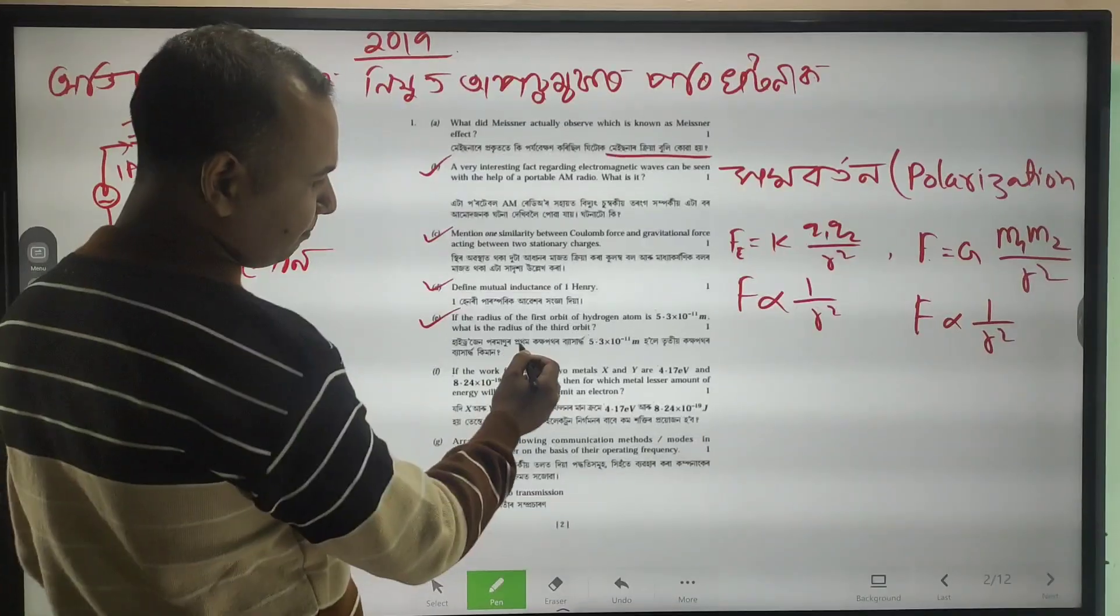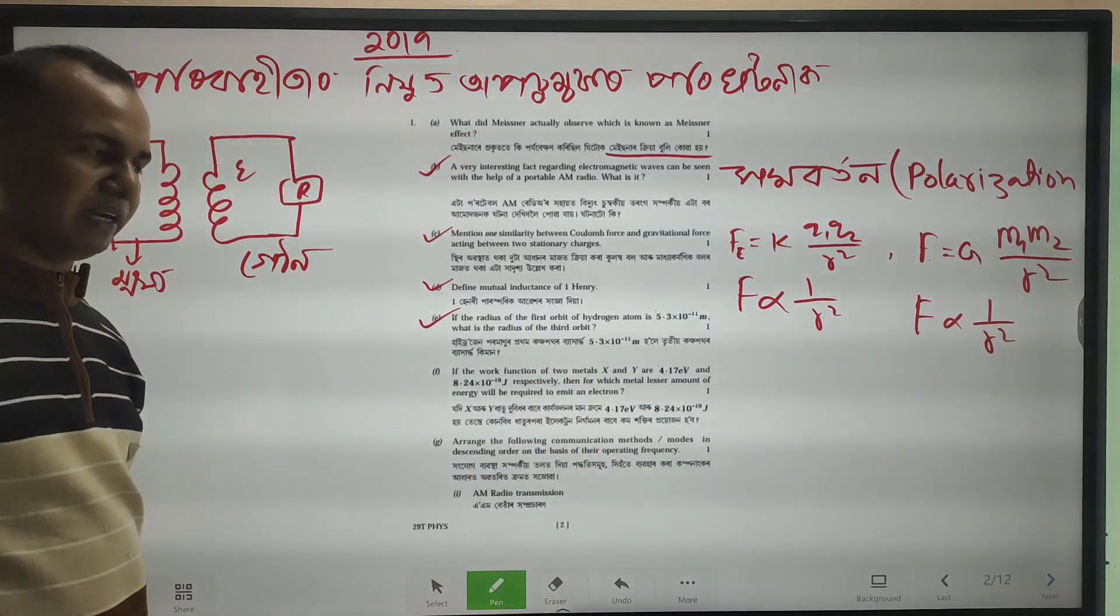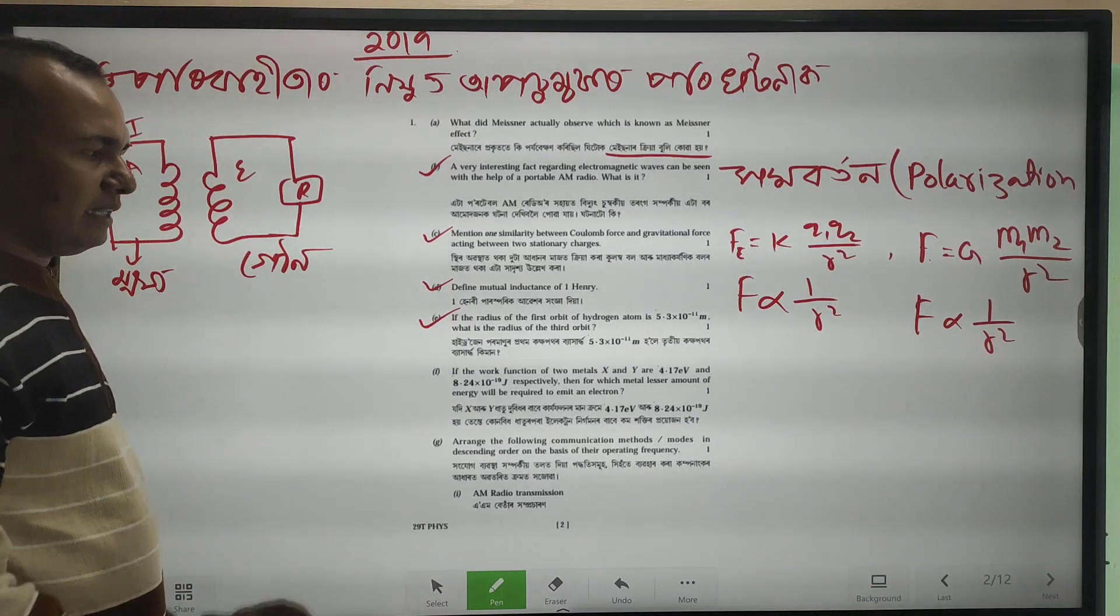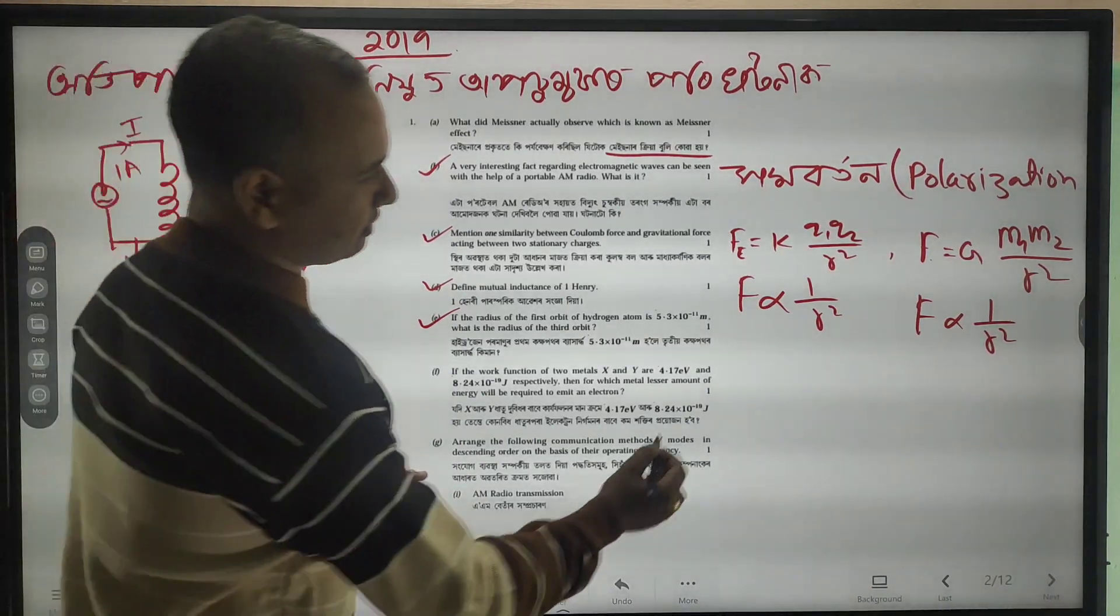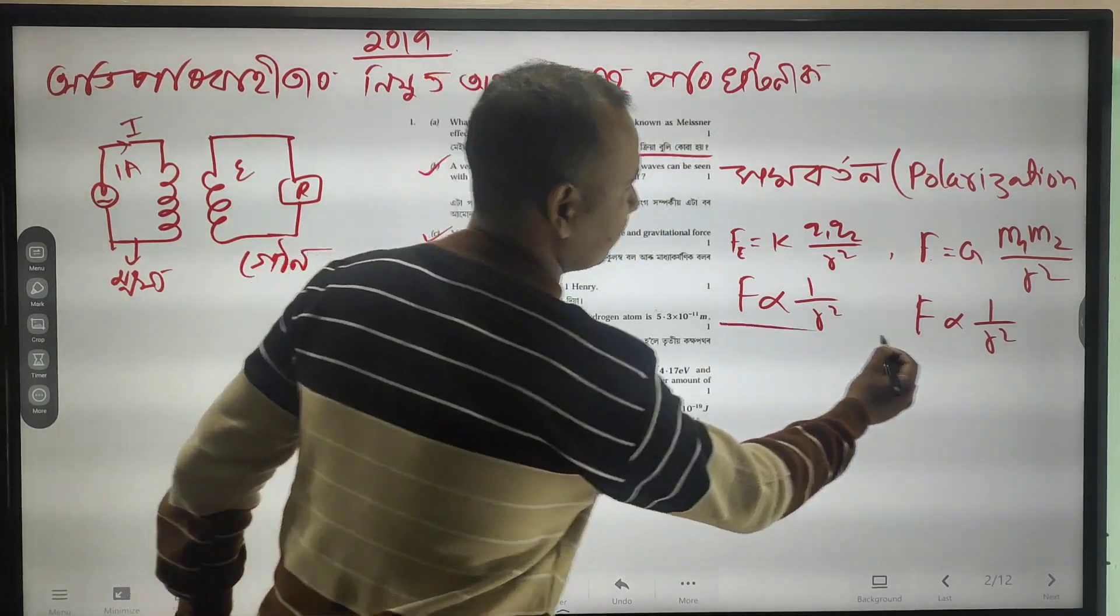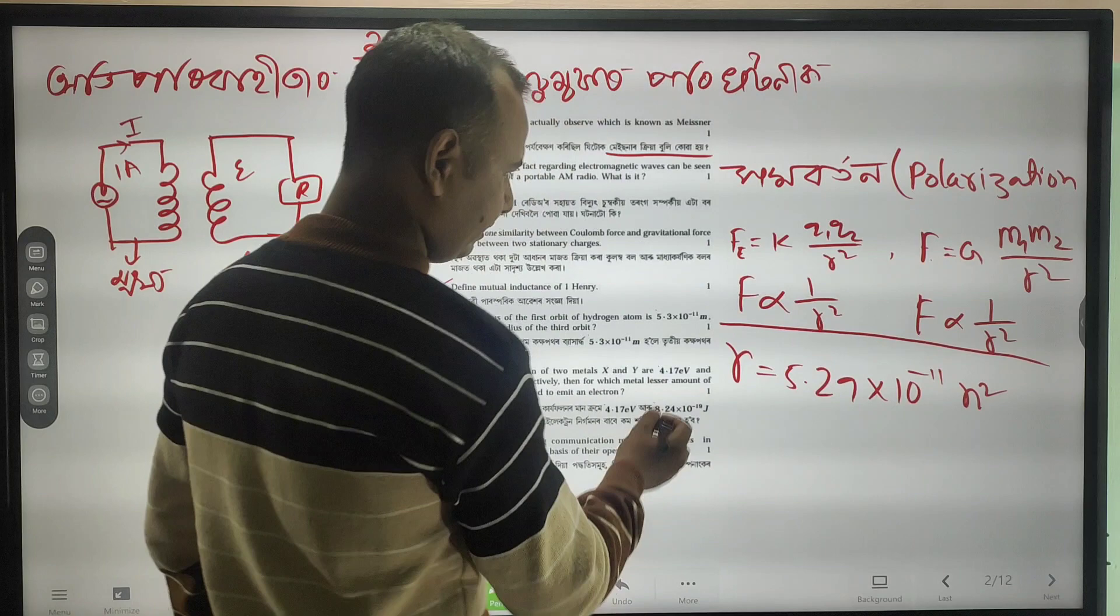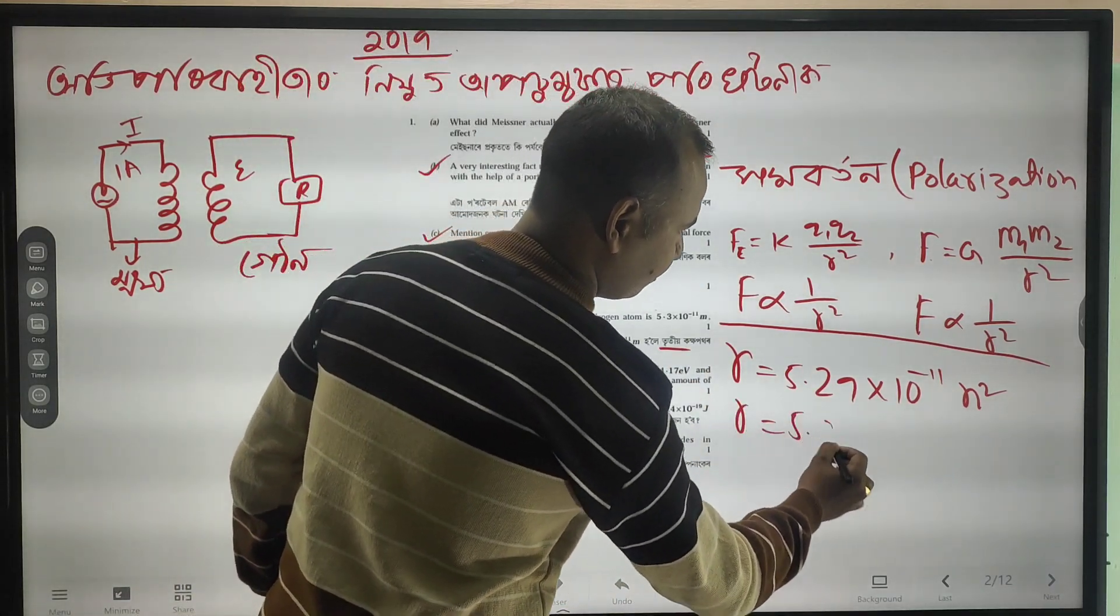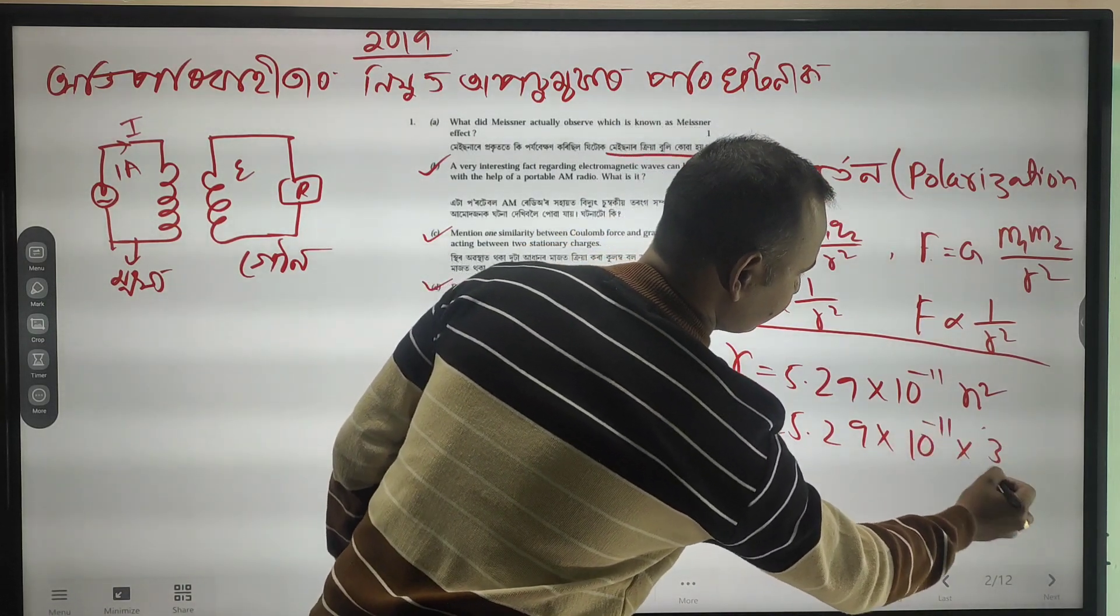Next, the hydrogen pormonol pothom kakha pothor Vibheda is 5.3 into 10 to the power of minus 11. How do I know the hydrogen kakha pothor Vibheda formula? r is equal to, the total kakha potha is 5.29 into 10 to the power minus 11 into 3 squares.